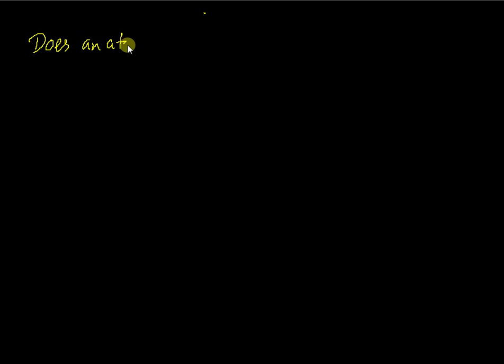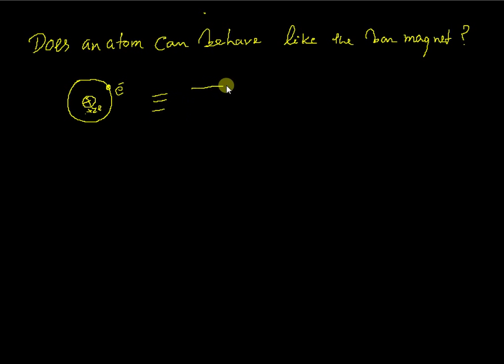Does an atom can behave like a bar magnet? Is it possible that the atom or atoms which have a nucleus and one electron in the outermost orbit can be equivalent to a bar magnet?